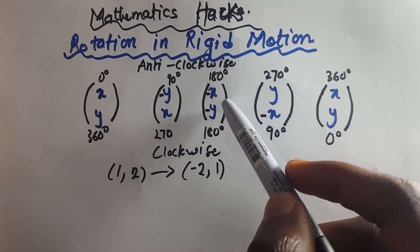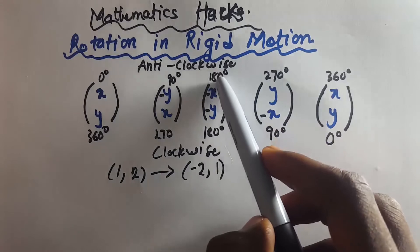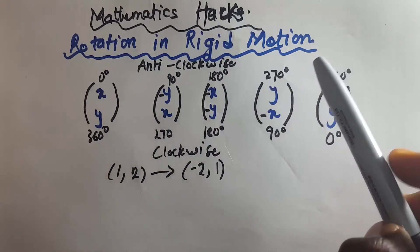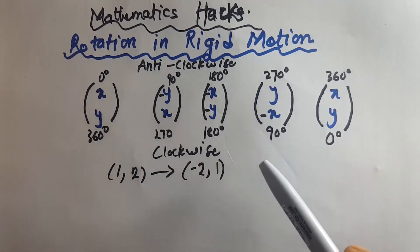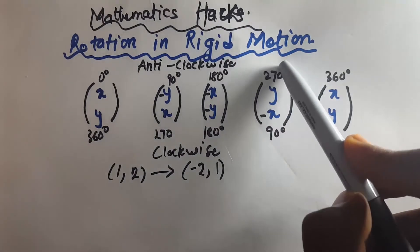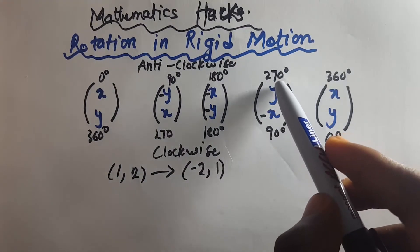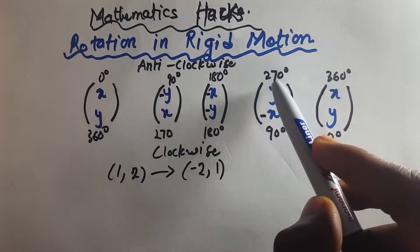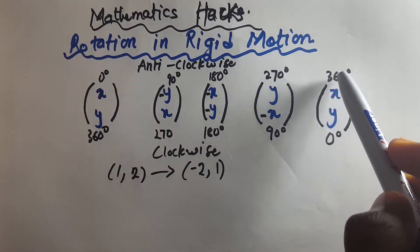For anti-clockwise 270 or clockwise 90 degrees, you bring your y value first and negate your x. For the last one, anti-clockwise 360 or clockwise 0 degrees is the same value for x and y.